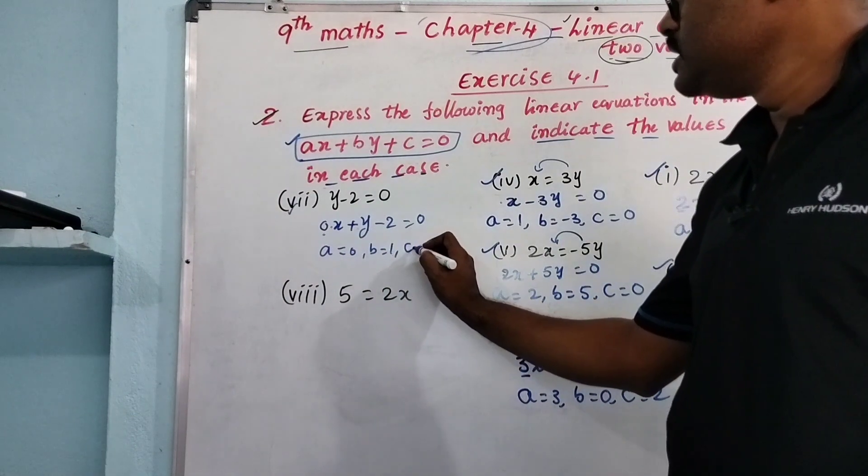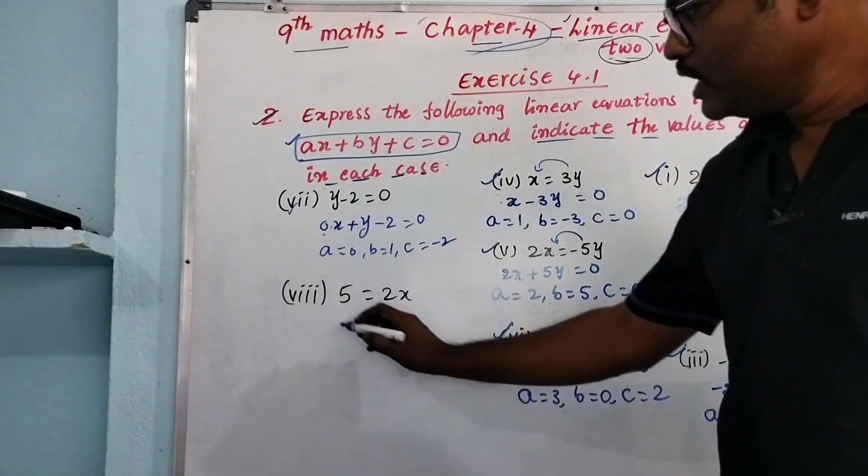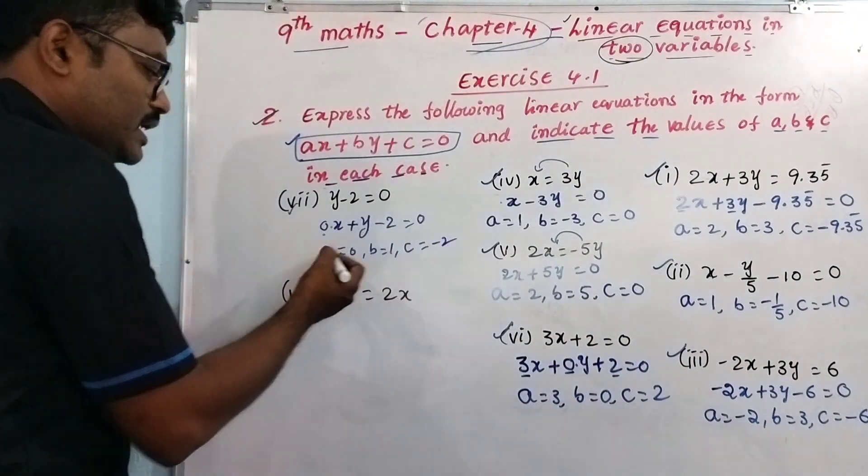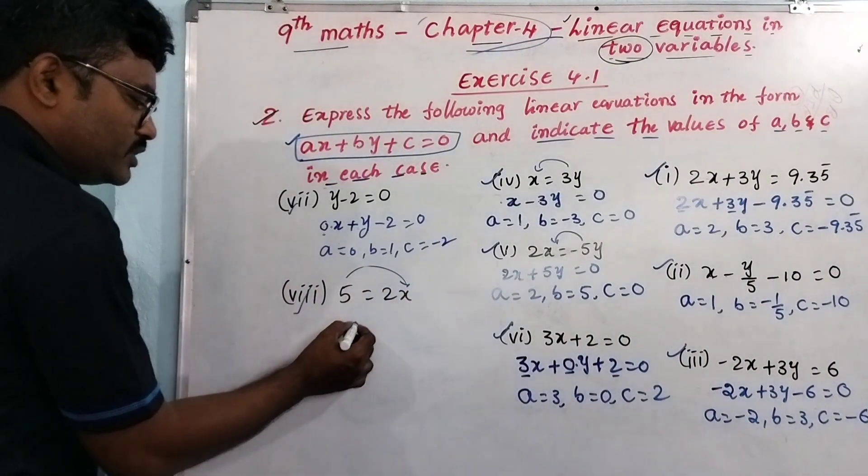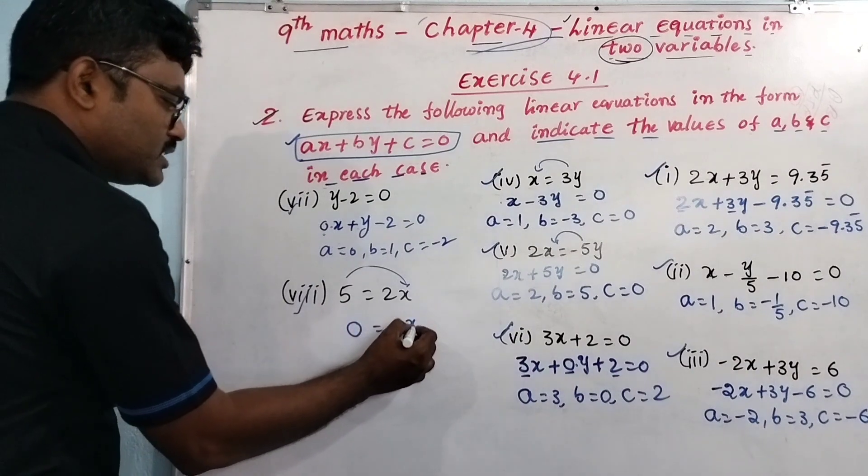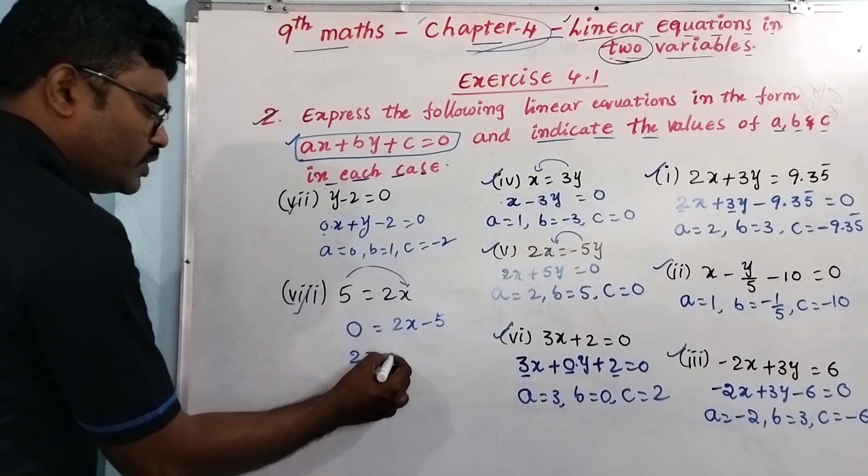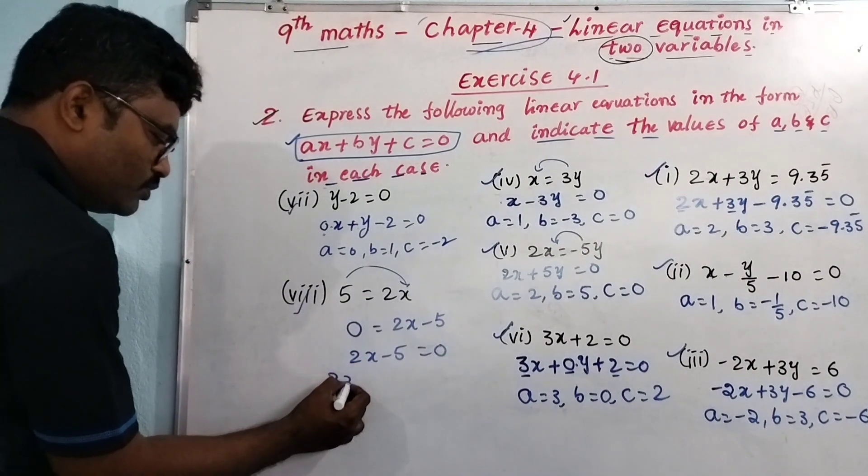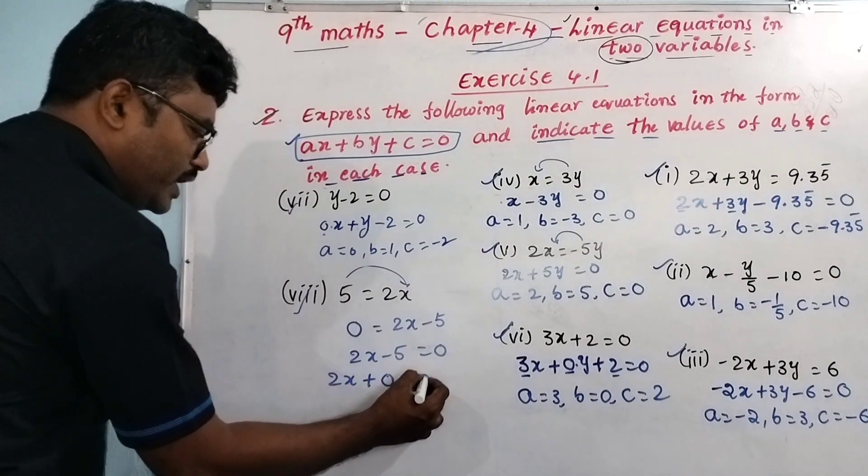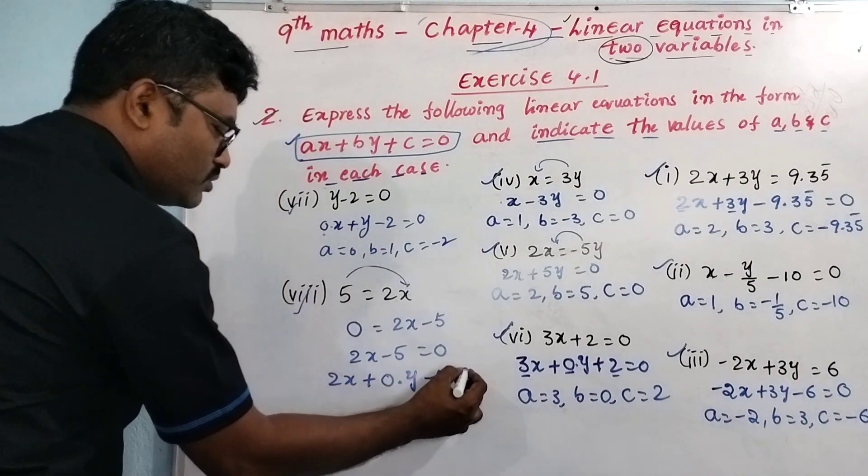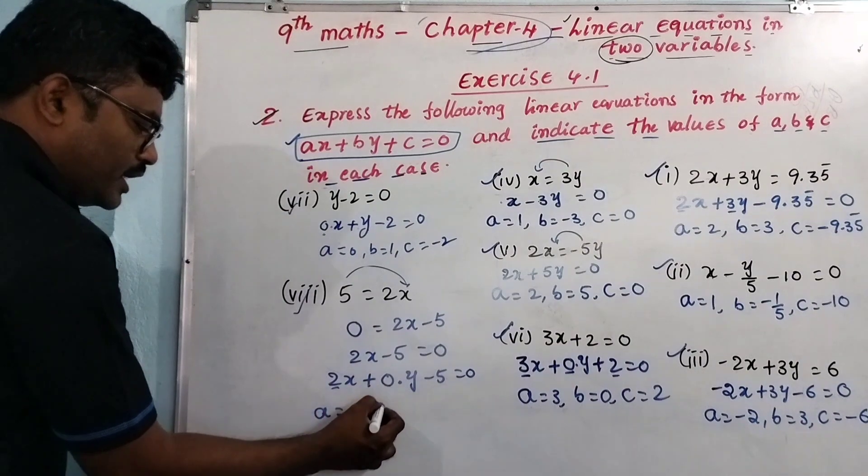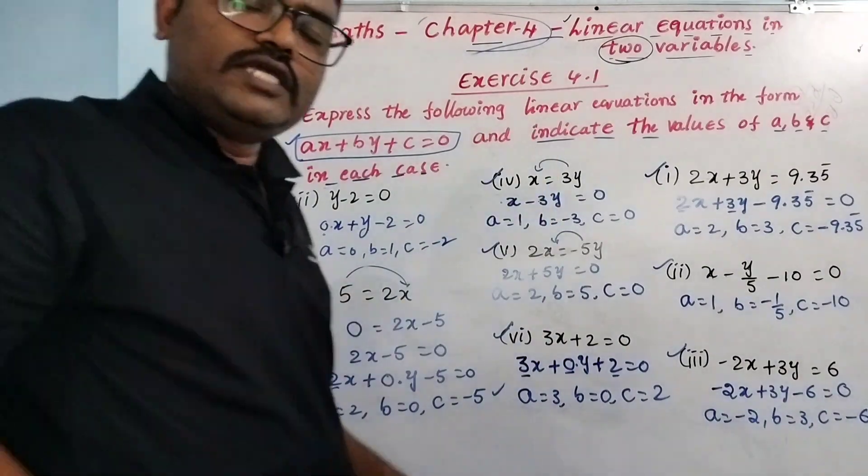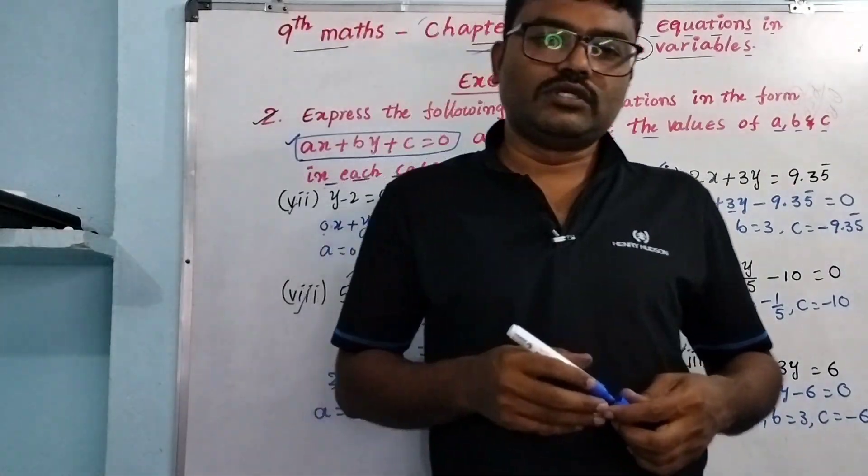Question number 8: 5 = 2x. This is nothing but 2x minus 5 = 0. A is 2, and we proceed similarly.